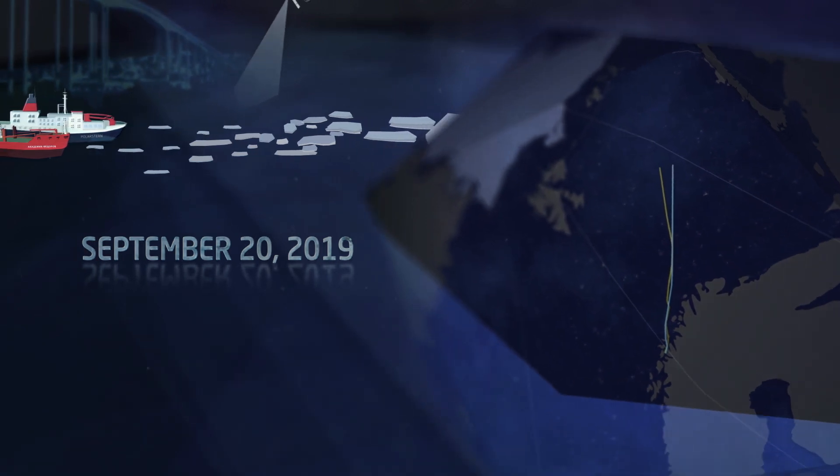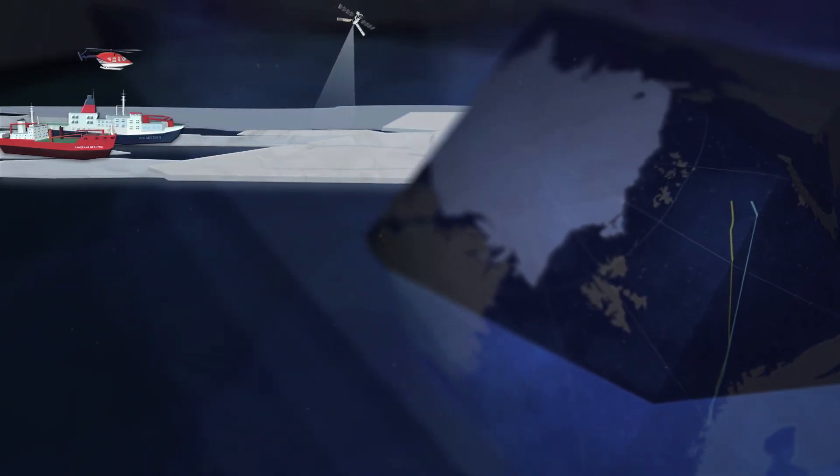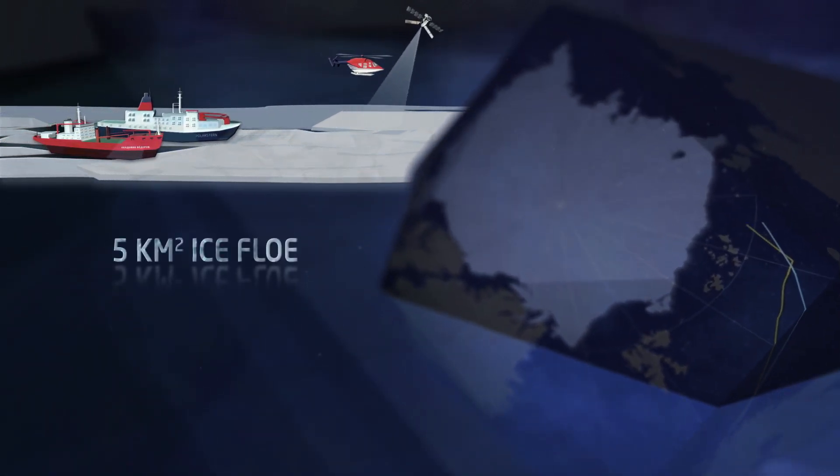Polarstern set sail from Norway bound for the Arctic, supported by the Russian research vessel Akademik Fedorov, her goal to find a suitable ice flow.